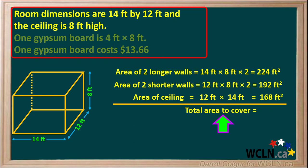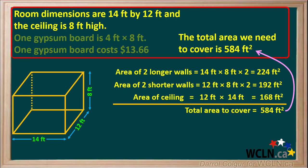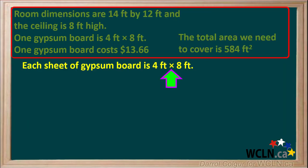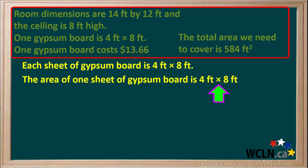To get the total area we need to cover, we add all these areas up and get a grand total of 584 square feet. Each sheet of gypsum board is 4 feet by 8 feet, so the area of one sheet is 4 feet × 8 feet, which is 32 square feet.